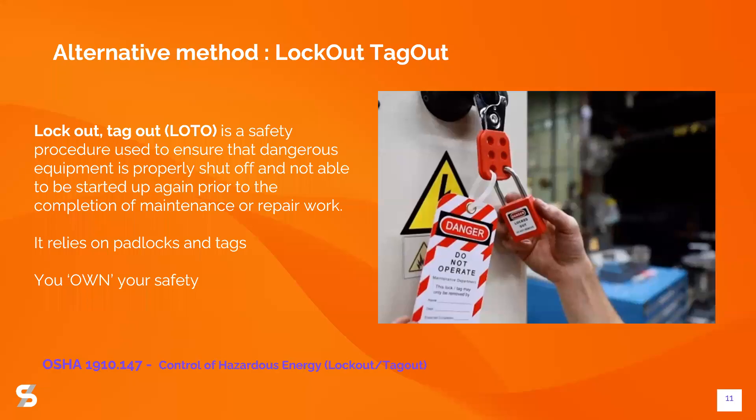I would like to introduce an alternative method to trap key interlocks, which is lockout tagout. I wanted to talk about it because it is the most widespread concept used for performing safety procedures in industrial workplaces — simpler to use and understand, relying mainly on items such as padlocks and tags. A lockout procedure is a safety procedure used to ensure that dangerous equipment is properly shut off and cannot be started again, which is actually the same objective as trap key interlocks.